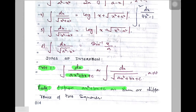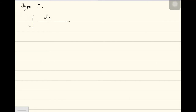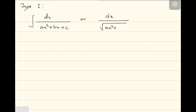Type 1: we have integration dx divided by ax squared plus bx plus c — that is a quadratic in the denominator. Or the same format but with a root: under root of ax squared plus bx plus c. It is the same integral, but the only difference is one is without root and the other is with root. The rule says: express ax squared plus bx plus c as a sum or difference of two perfect squares.